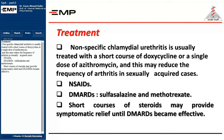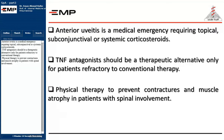Treatment: non-specific chlamydial urethritis is usually treated with a short course of doxycycline or a single dose of azithromycin, which may reduce the frequency of arthritis in sexually acquired cases. NSAIDs and DMARDs such as sulfasalazine and methotrexate are used. Short courses of steroids may provide symptomatic relief until DMARDs become effective. Anterior uveitis is a medical emergency requiring topical, subconjunctival, or systemic corticosteroids.